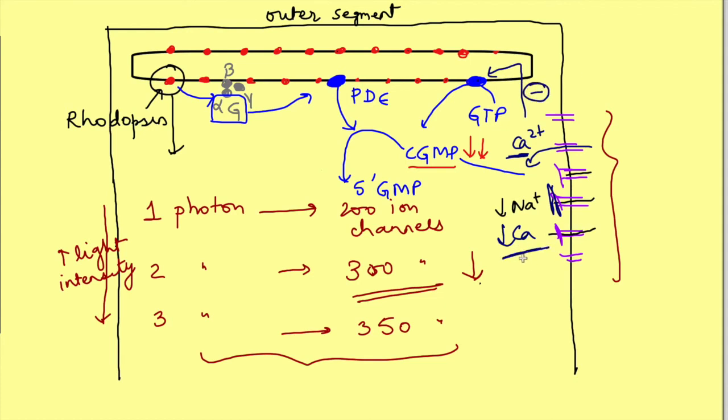With decrease in calcium, background guanyl cyclase activity will increase causing increase in cGMP. Also, the affinity of channels to cGMP increases. So channels are kept open with a lower cGMP concentration. So basically, this decrease in intracellular calcium is offsetting the action of the photon.